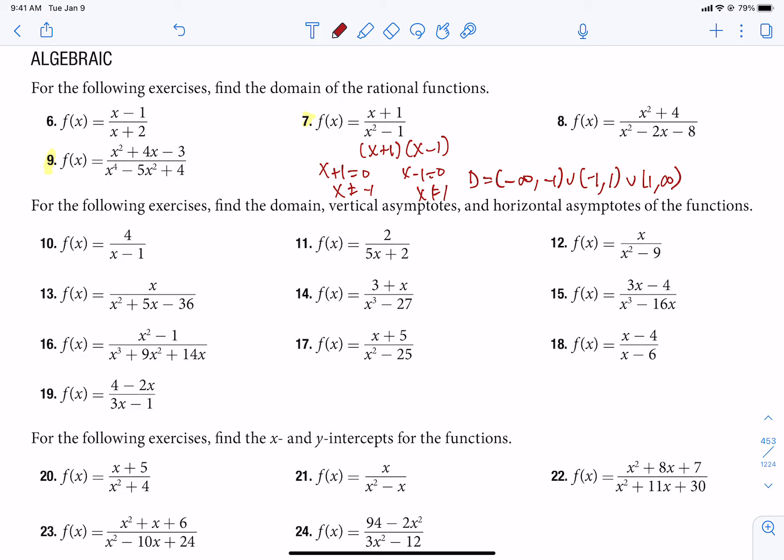Now 11 through 19, we're pretty much doing the same thing, except we're kind of just going one more step. What we want to do is find the domain, vertical asymptotes and horizontal asymptotes. So I'm going to list the holes as well. I would like to do problem 17 with you.